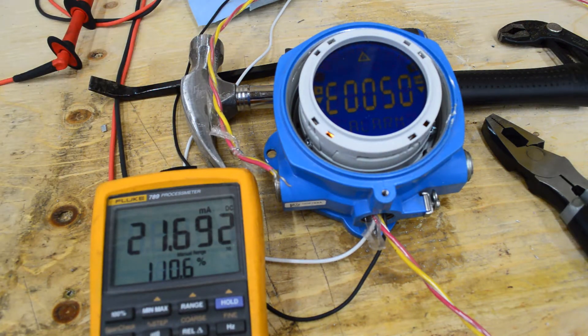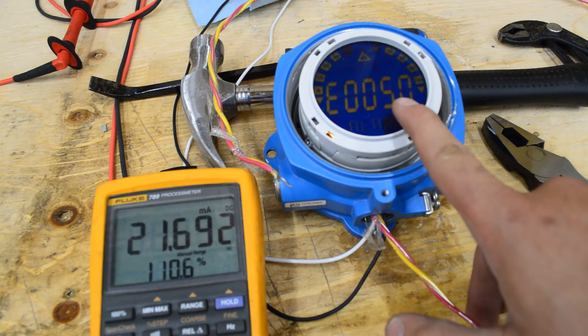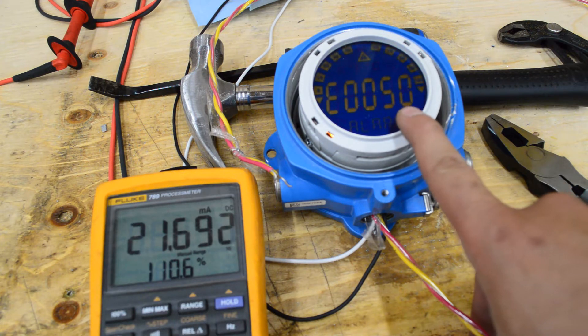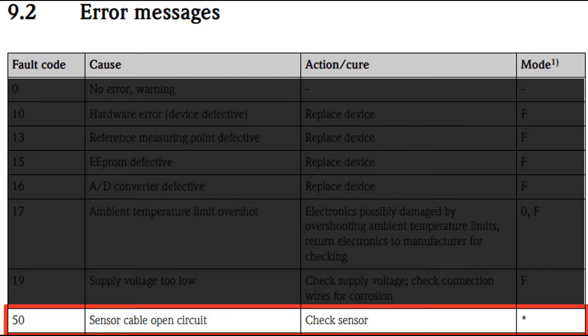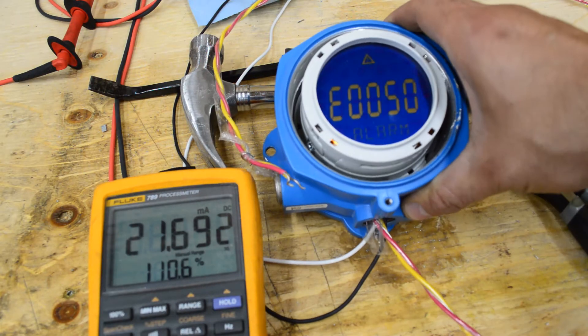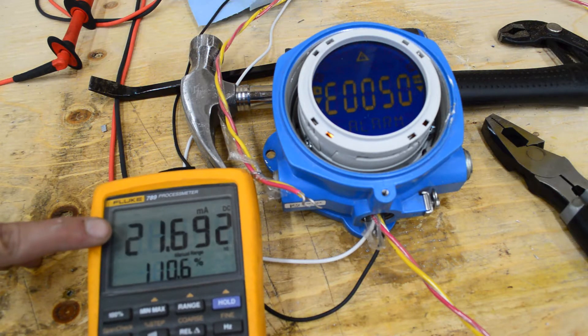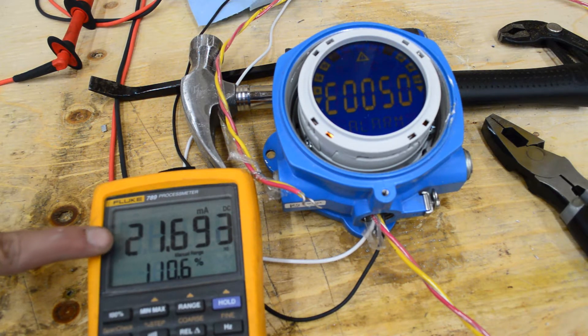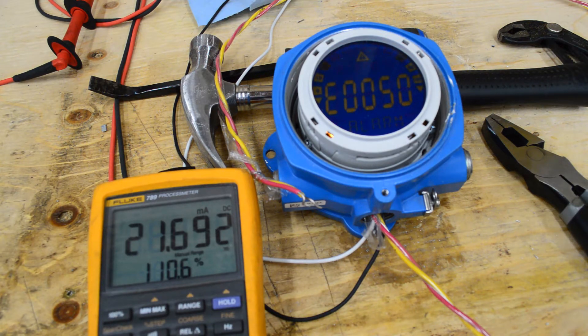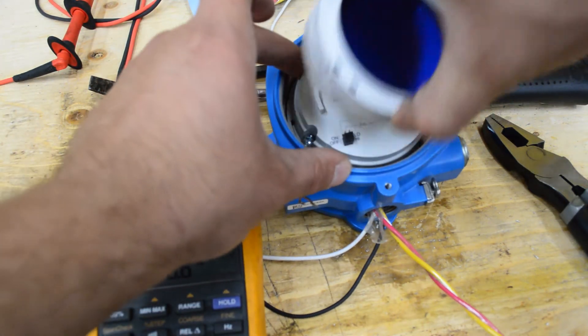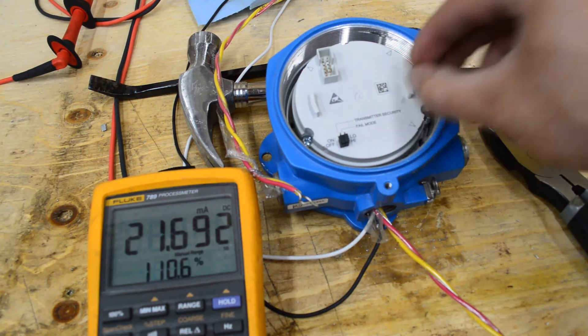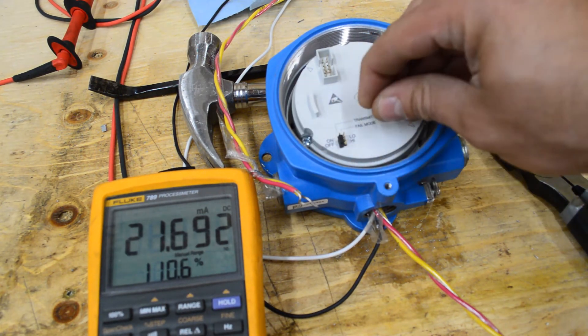And there should be an error message showing up on here too. So, yeah, there we go. So that must mean that is their open circuit error code. And it's currently in an alarm state. And it's putting out more than 20 milliamps which would generally be a fault.